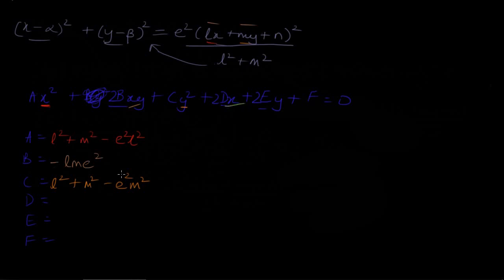As for the x term, I have LNE square minus alpha L square minus alpha M square. So again, it's pretty obvious if you've worked this out. I'll just write y before I move on to the trick. So the y coefficient will be MNE square minus beta L square minus beta M square.